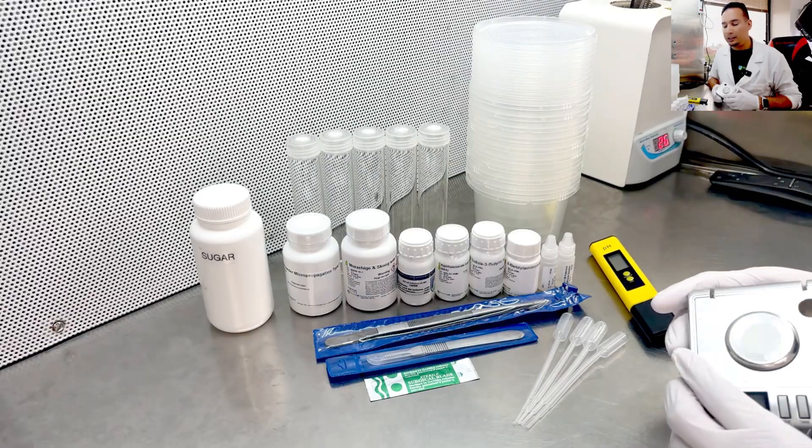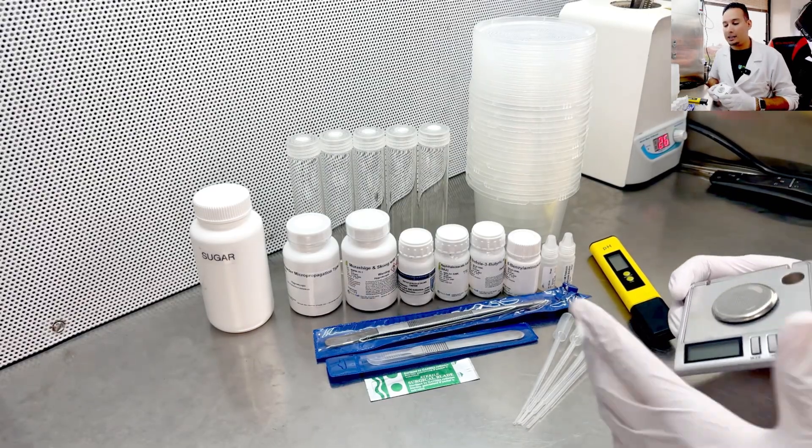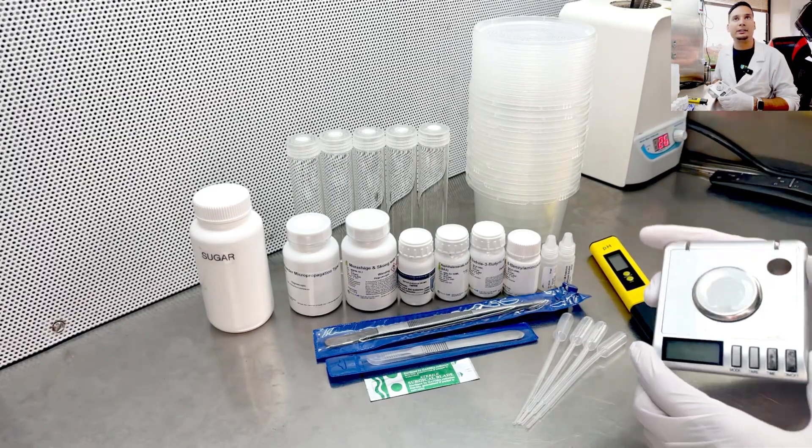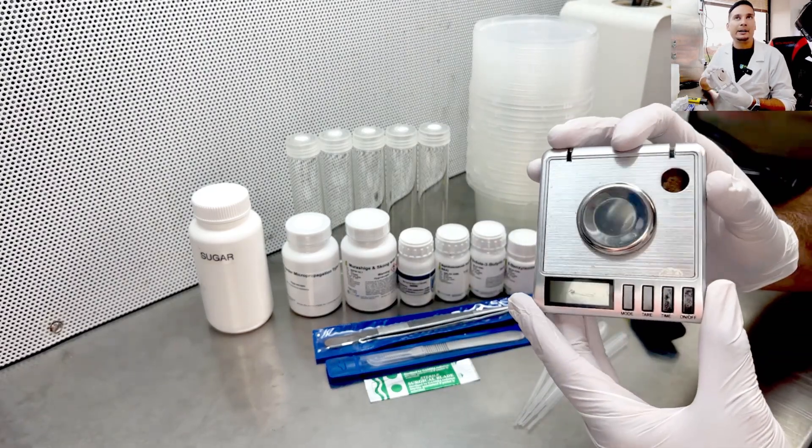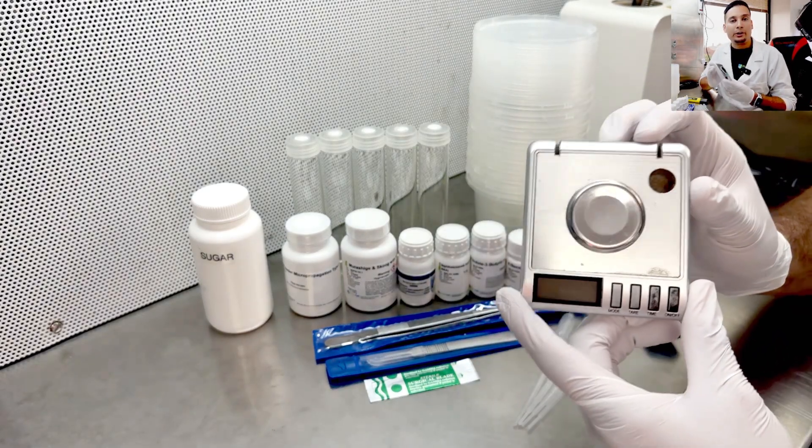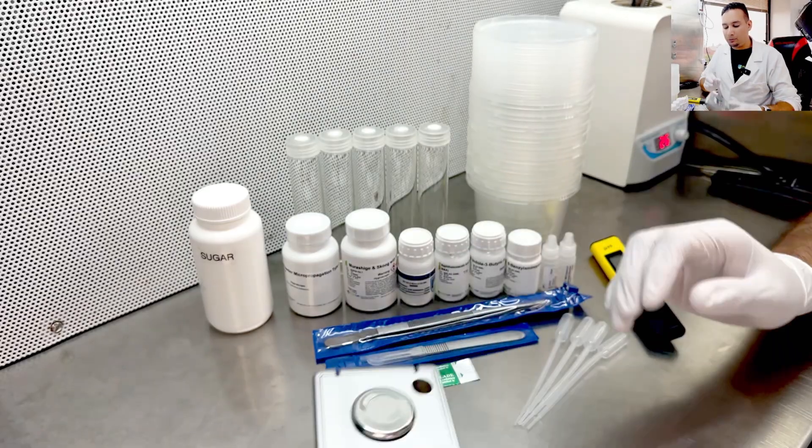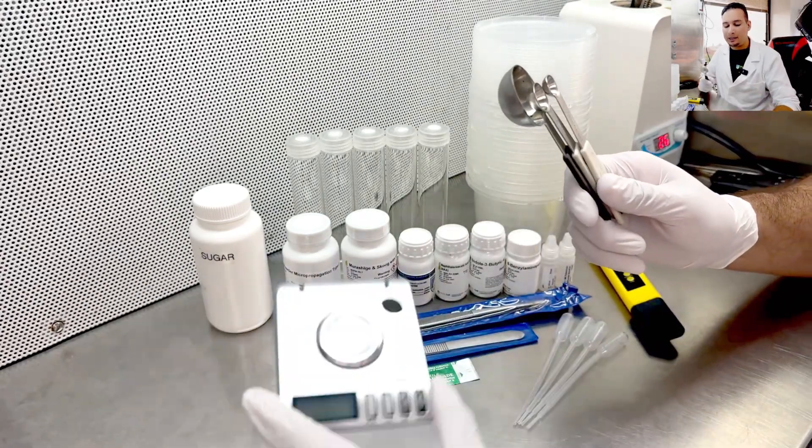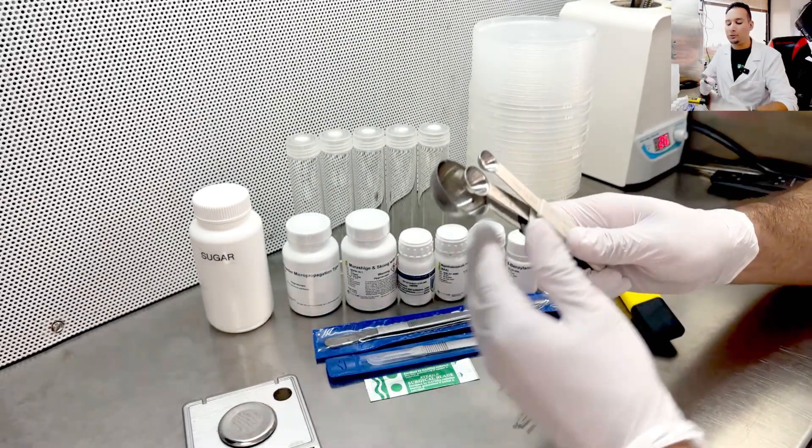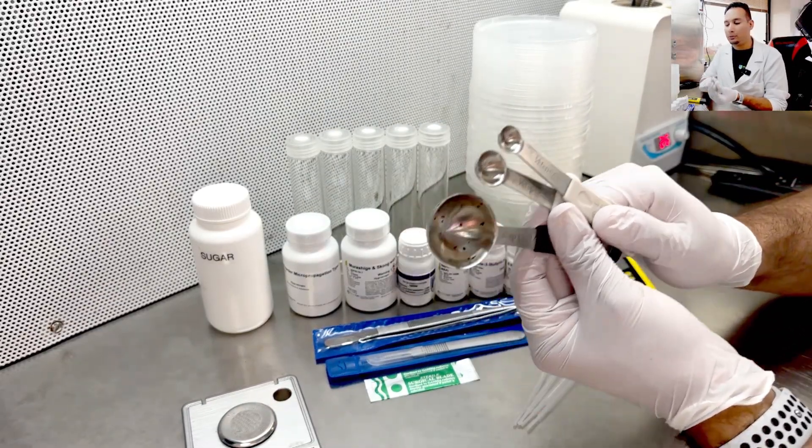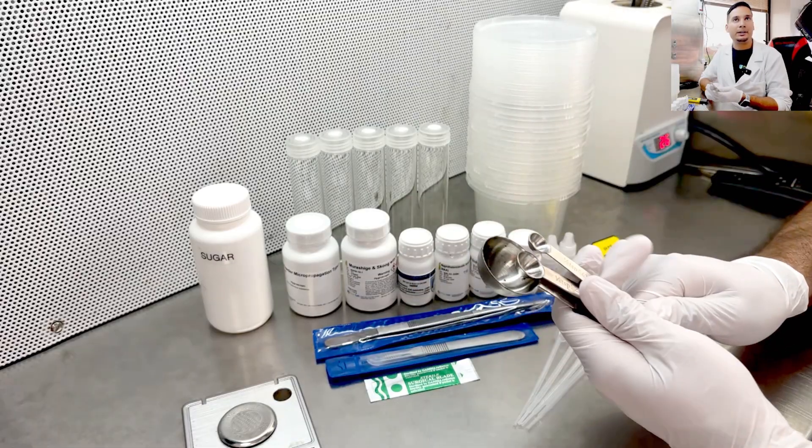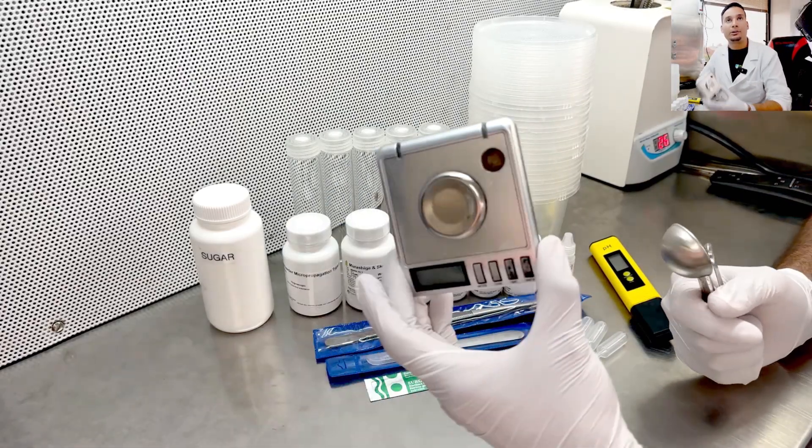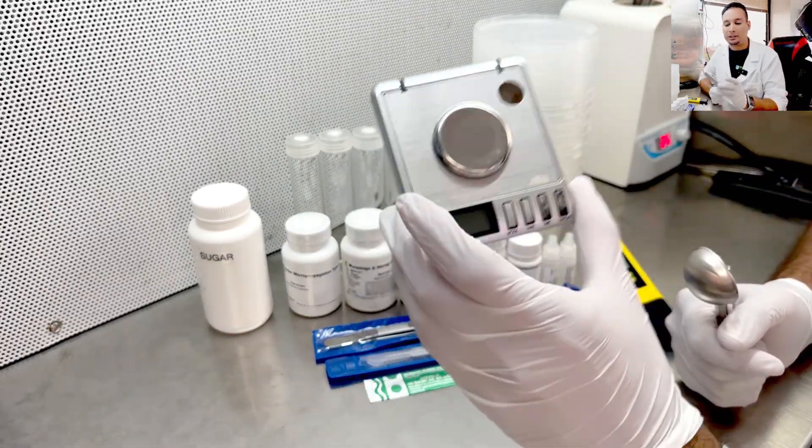Also, you will need something to measure your media, your sugar, and your other dry ingredients. So I have a digital scale, however, in this video I will show you how to use some measuring spoons. So if you don't have a digital scale like this, I will show you how to use measuring spoons to measure your sugar, your agar, and your media.